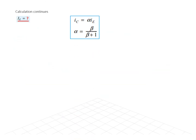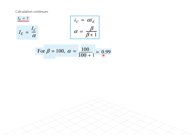To find IE we use the formula IC = α × IE, where α = β / (β + 1). So IE = IC / α. IC is given as 2 milliampere. Alpha = 100 / (100 + 1) = 0.99. Therefore IE = 2mA / 0.99 = 2.02 milliampere.